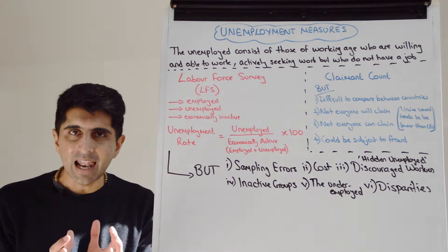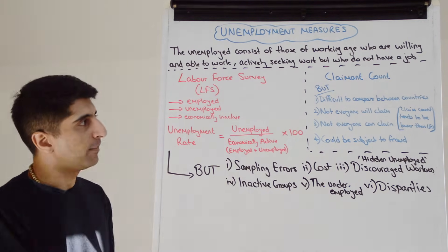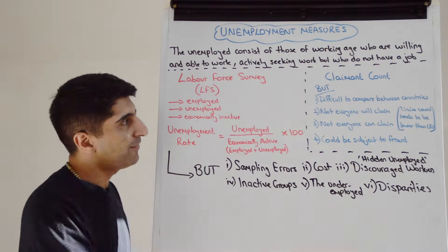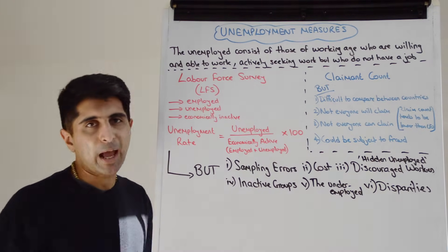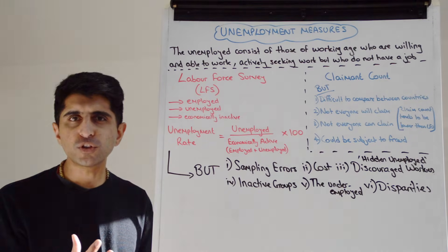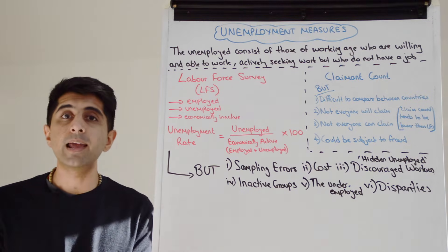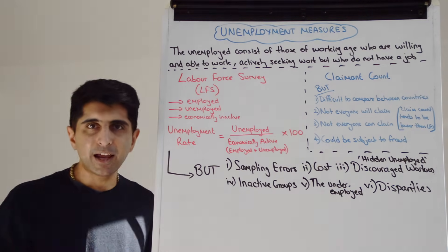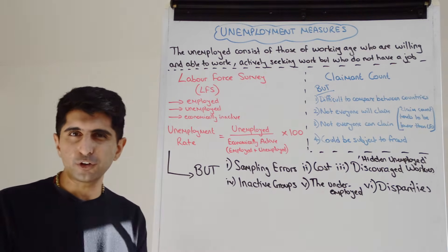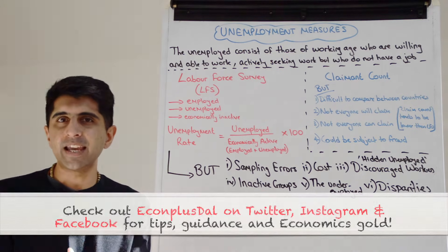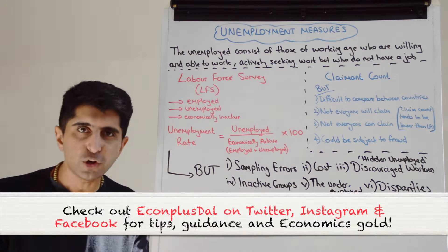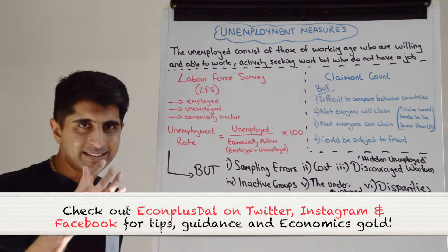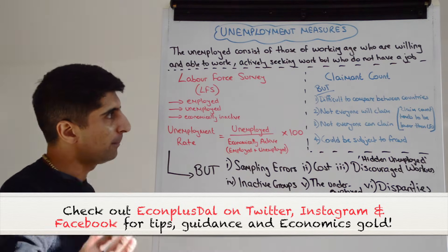It's fundamental that we know the LFS measure of unemployment. But there is an alternative, and that alternative is the claimant count, which is simply a measure of the total number of people who are claiming unemployment benefits. But this is by no means the headline measure — it's just an alternative, just another piece of data that we have to look at unemployment, but definitely not the headline measure. The headline measure is the LFS unemployment rate.